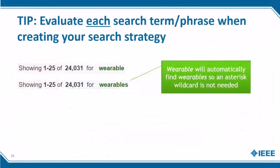As you are putting together your search strategy, it can be helpful to evaluate each search term or phrase individually. For example, by doing a search for the term "wearable" and then a second search for "wearables" plural, I can confirm that IEEE Xplore will automatically find the singular and plural, so an asterisk wildcard is not needed.